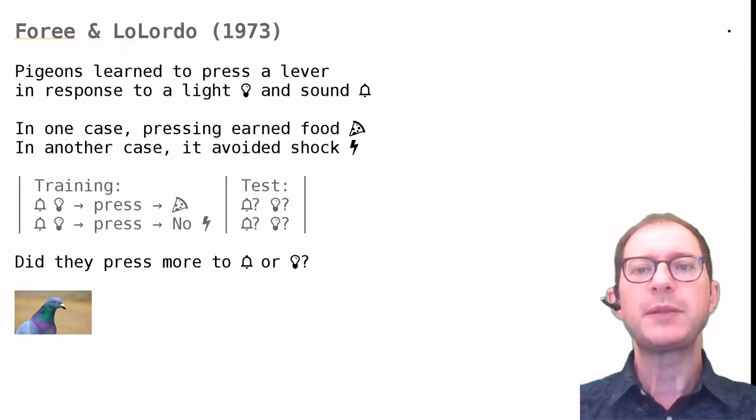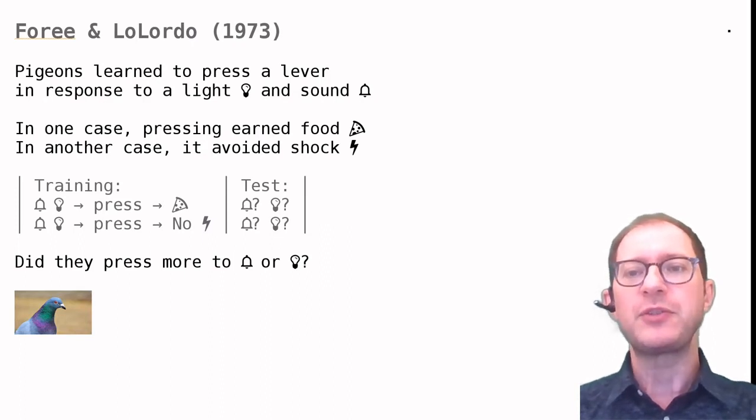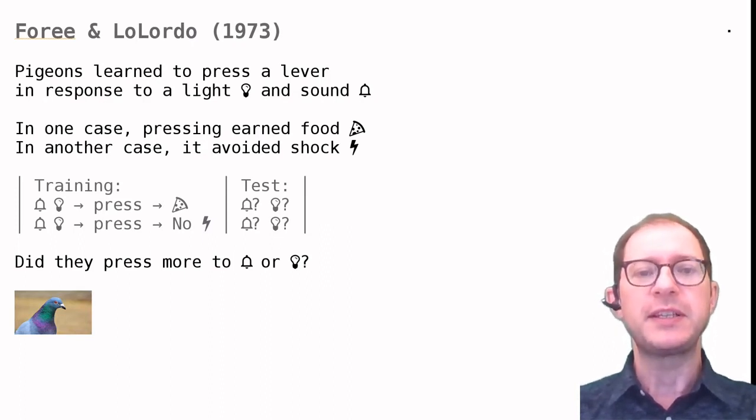The experiment we just discussed was a Pavlovian conditioning one, but we find overshadowing also in instrumental conditioning. In this example, Forey and Lolordo trained pigeons to press the lever in response to a light and sound presented together. In one kind of training, pressing earned food, in another it avoided the shock.